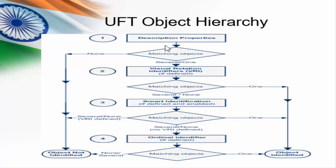When we start executing the script, first it will try to identify the description properties — that is mandatory and assistive property. If we are unable to identify using mandatory or assistive property, then the execution will get failed. Suppose if we found several objects with same properties and value, then it will go to the next level of identification.